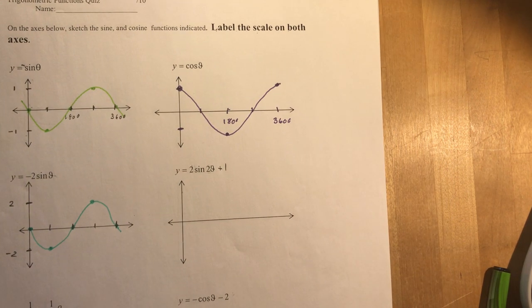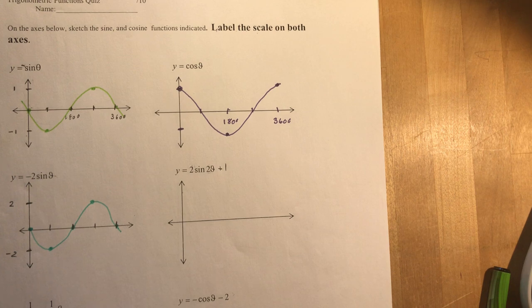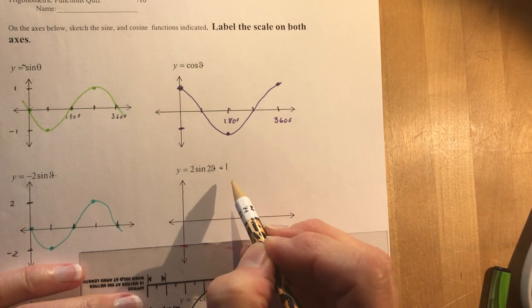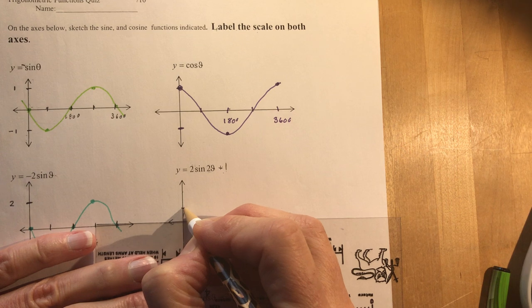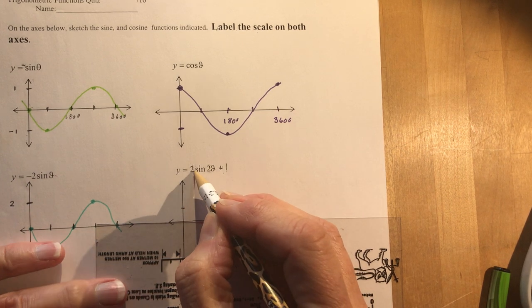Two sine two theta plus one. Oh my goodness, so many things to figure out here. The first thing you need to do is find a ruler. There we go. Plus one, this is my axis, right? So I'm going to write that on first. So I'm going to make this one. Now the amplitude is two, so how far do I need to go up?